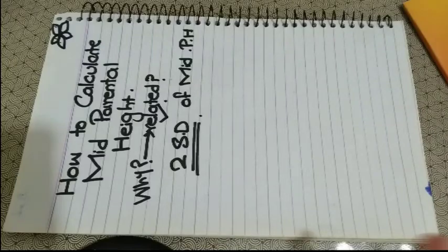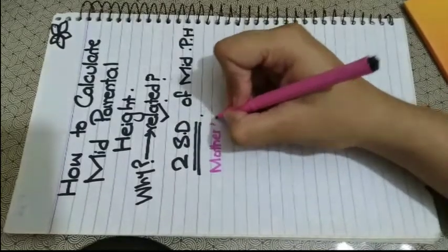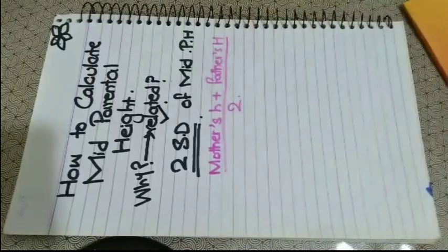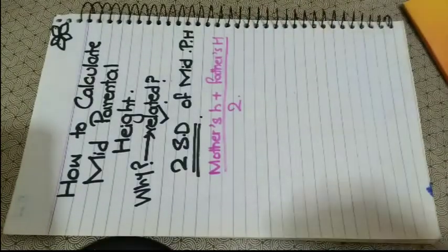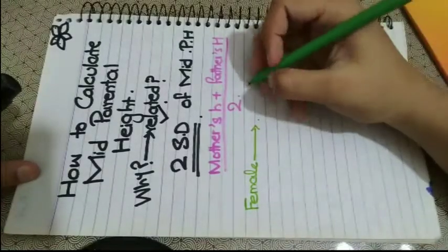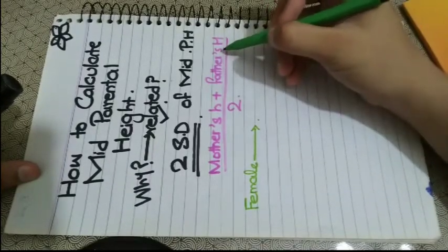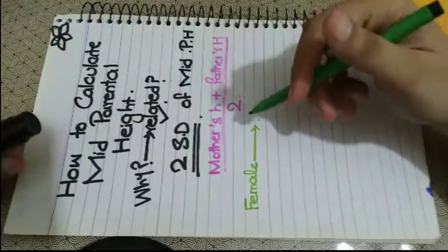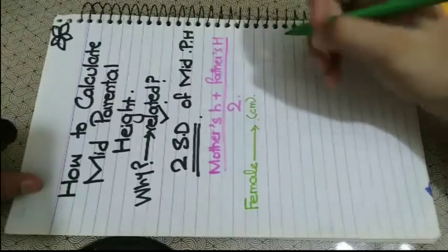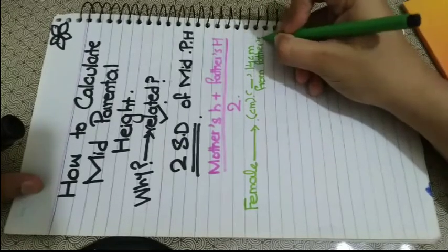Mid-parental height is calculated as an average between mother's height plus father's height divided by two. But there's a difference: if the child is female, we subtract 14 centimeters from the father's height (or 5 inches if using inches). So I will subtract 14 centimeters from the father's height and then put the value in the formula.